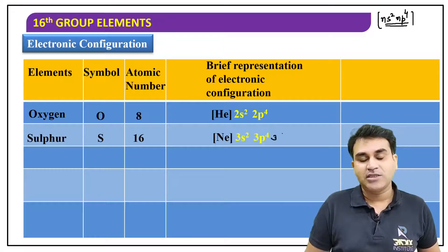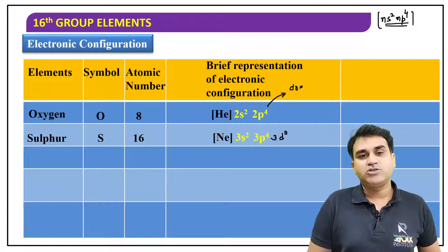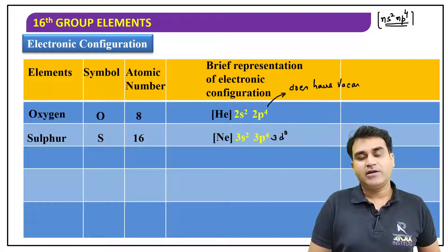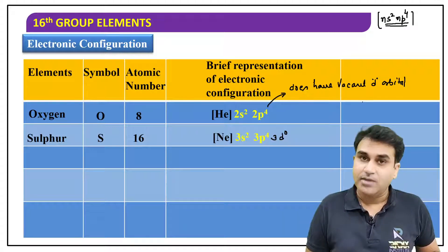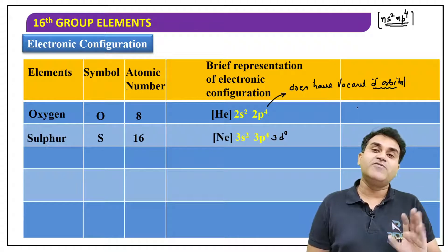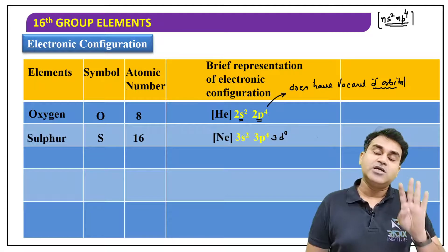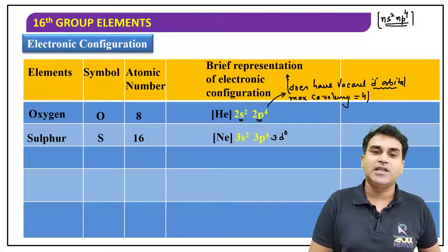Notice carefully — oxygen does not have a 3d orbital, and there is no vacant d orbital in the outermost shell, because 2d does not exist. So since no d orbital is available in the outer shell, only as many covalent bonds can form as orbitals are available. How many orbitals are available? Three p orbitals and one s orbital — 4 orbitals available. So maximum covalency will be 4. This rule is precisely applicable to all second period elements.